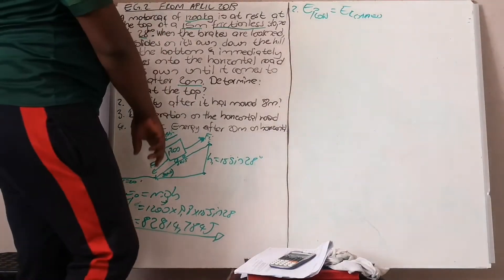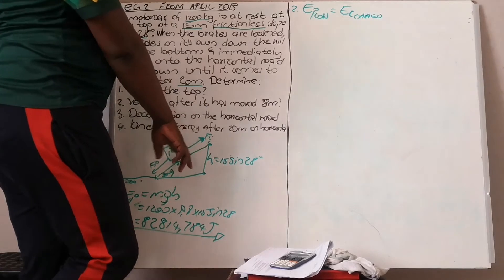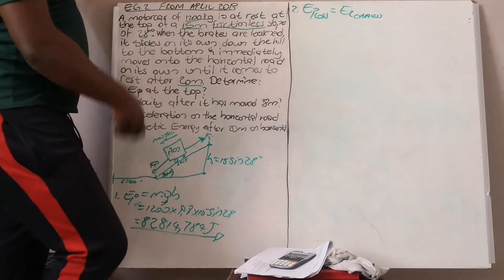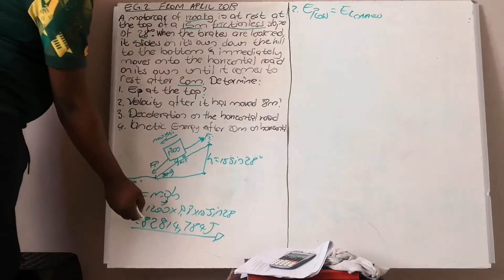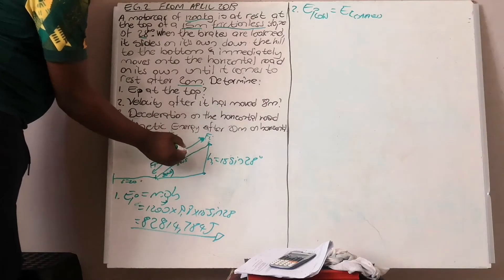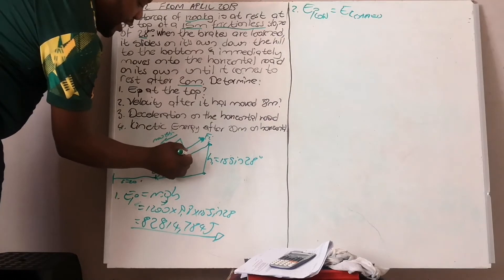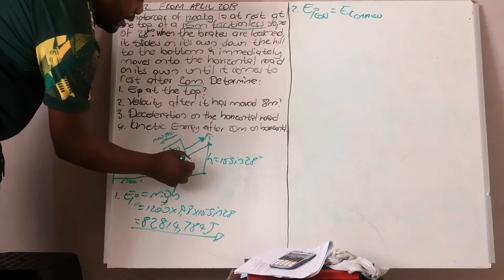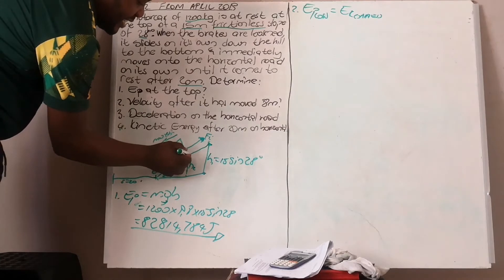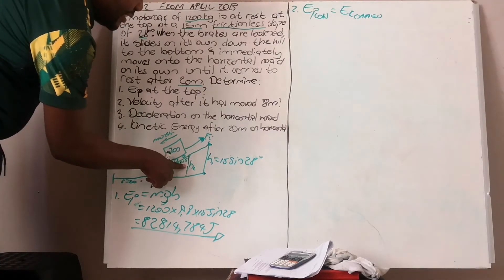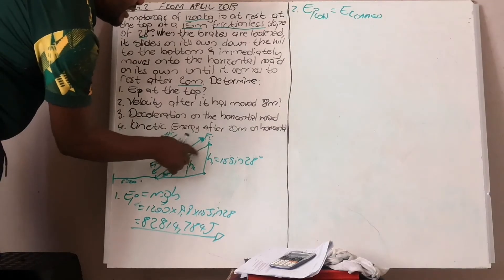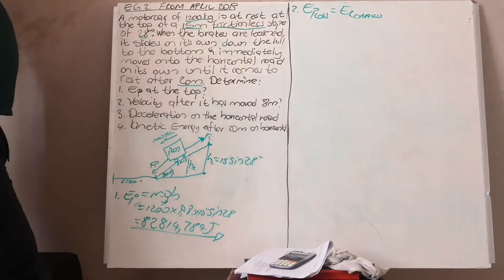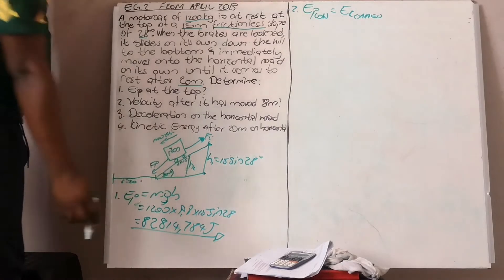The loss in potential energy after the object has moved 8 meters equals the gain in kinetic energy. The object starts with kinetic energy of 82,814 J. As it moves 8 meters, somewhere along the incline you have a new vertical distance h2. The difference between these two potential energies is the loss in potential energy, and that loss equals the gain in kinetic energy.